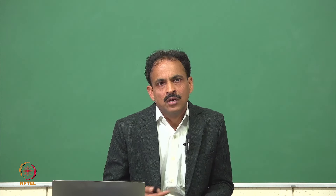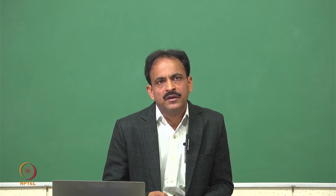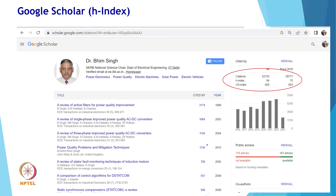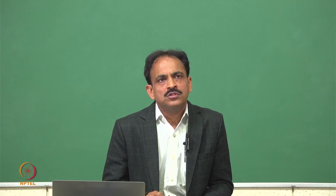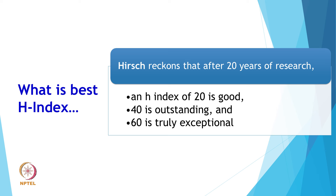You can also find H index in Google Scholar along with I-10 index and other metrics. According to Google Scholar, Ronald K. Kessler has the maximum H index. As per J. Hirsch, after 20 years of research an index of 20 is good, 40 is outstanding, and 60 is truly exceptional. The advantage of H index is that it combines productivity (number of papers published) and impact (number of citations) in a single number.